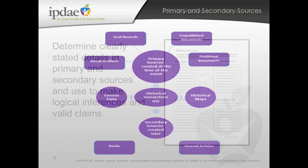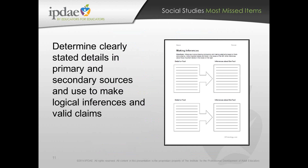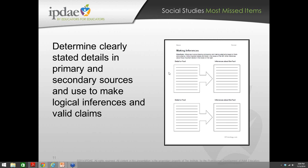Can we determine clearly stated details in a primary or secondary source? That's straightforward — it's right there in the text. But now can we use that information to make logical inferences and valid claims? We don't just find things; we've got to put them to use. We've had a lot of trouble with students over the years being able to make that whole leap into inferences as they're moving through.